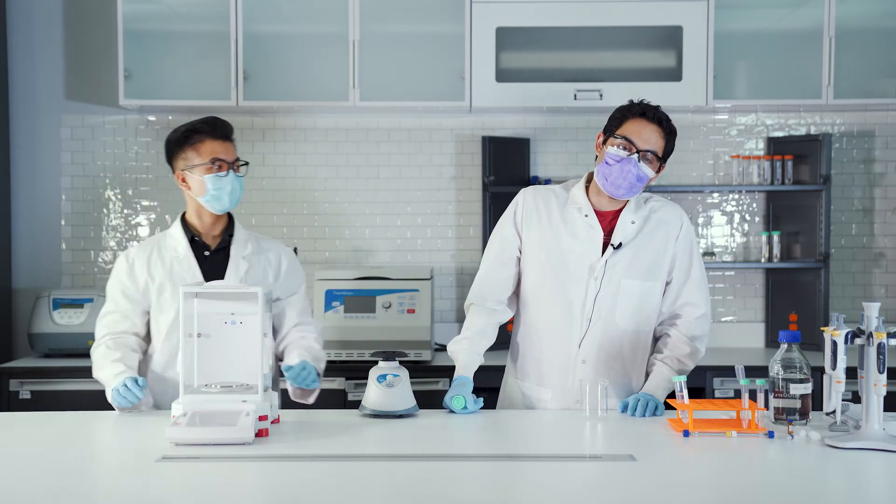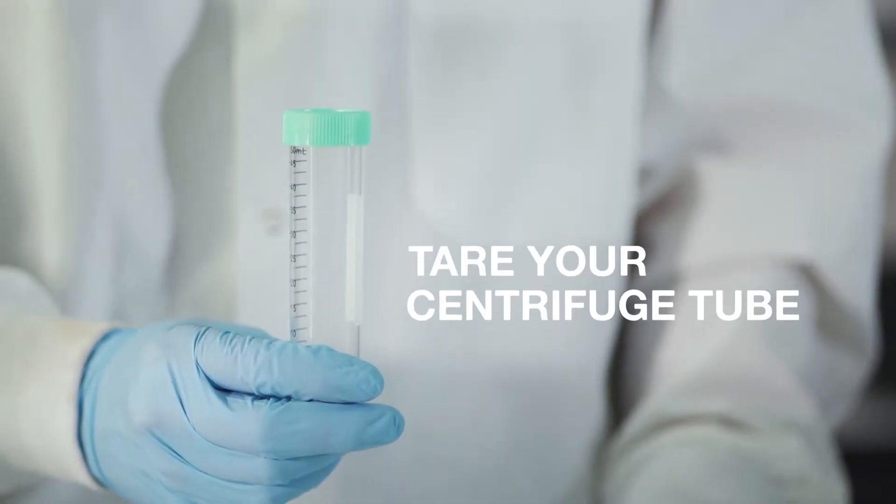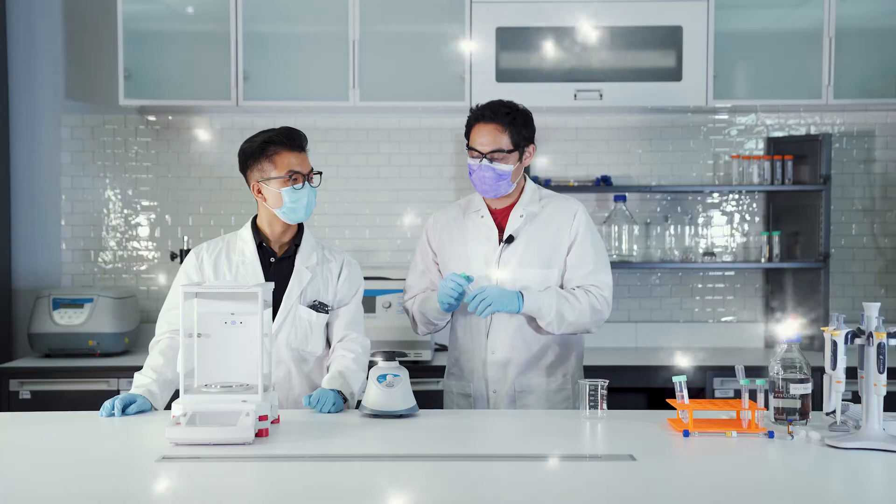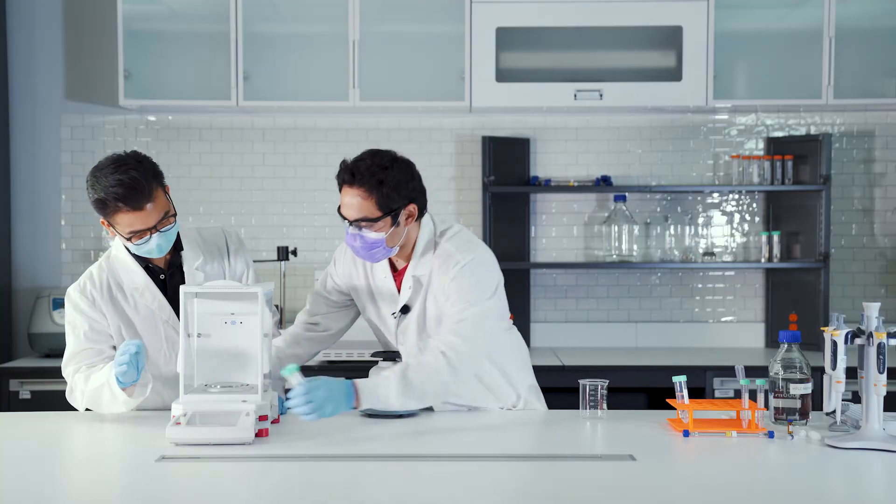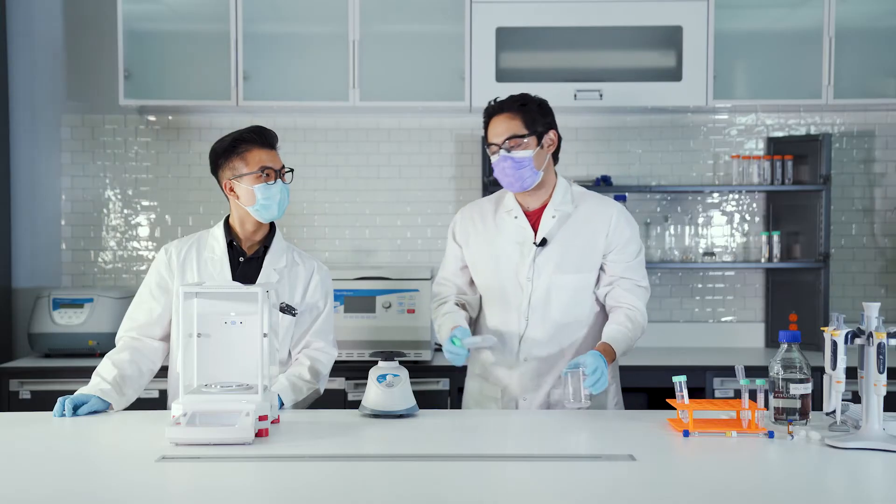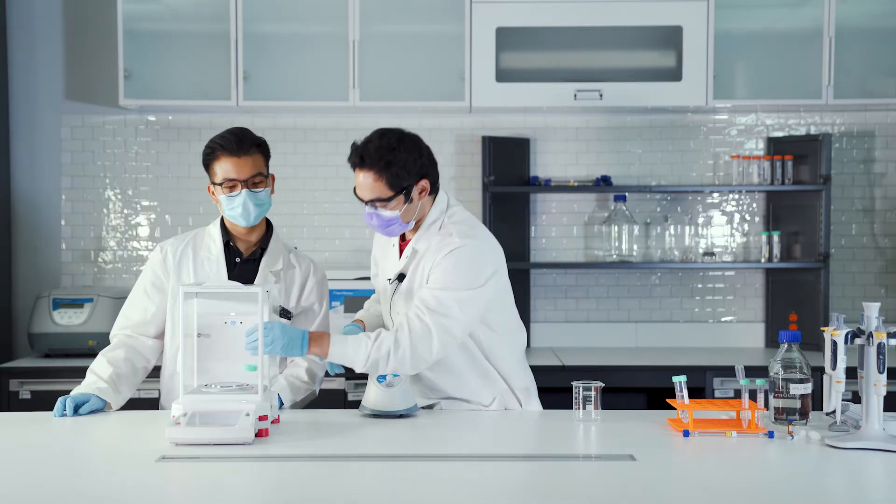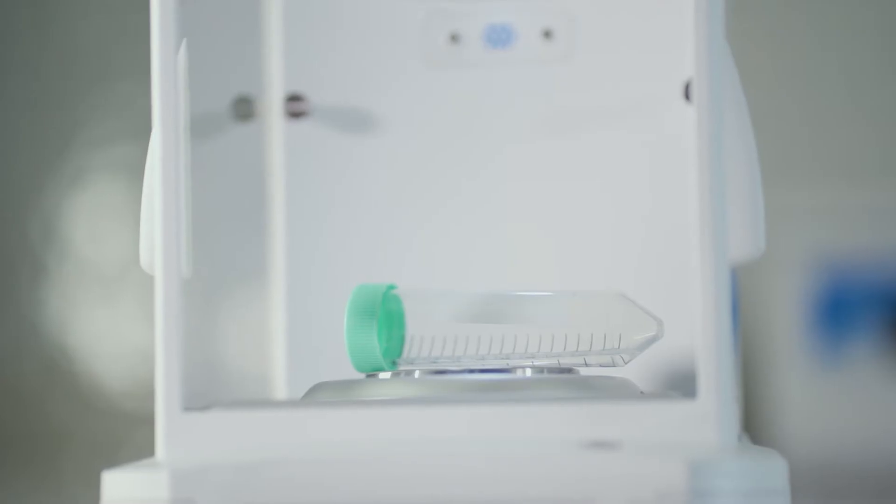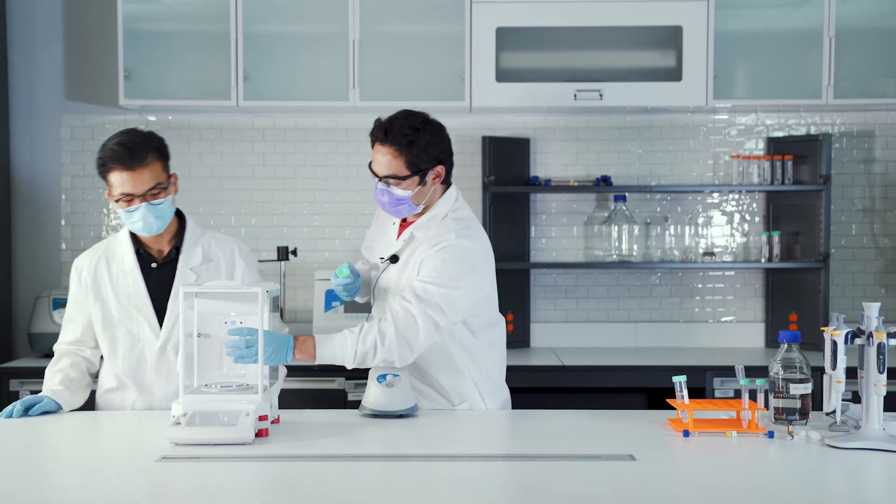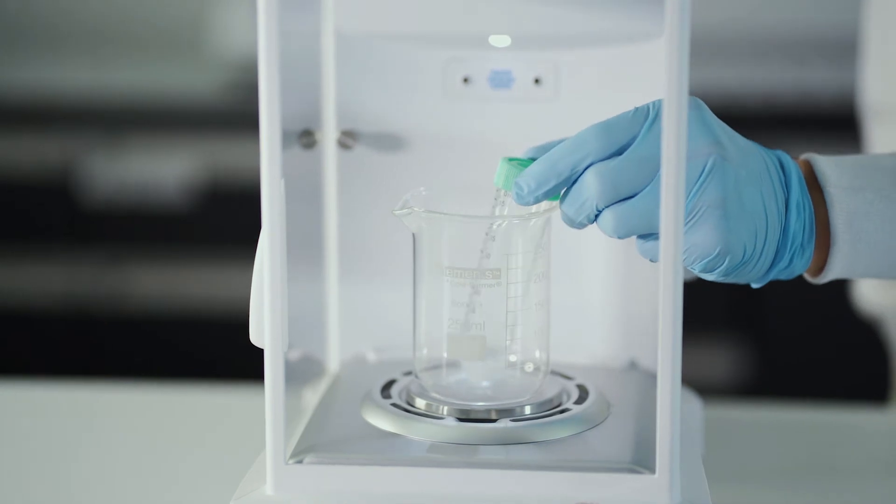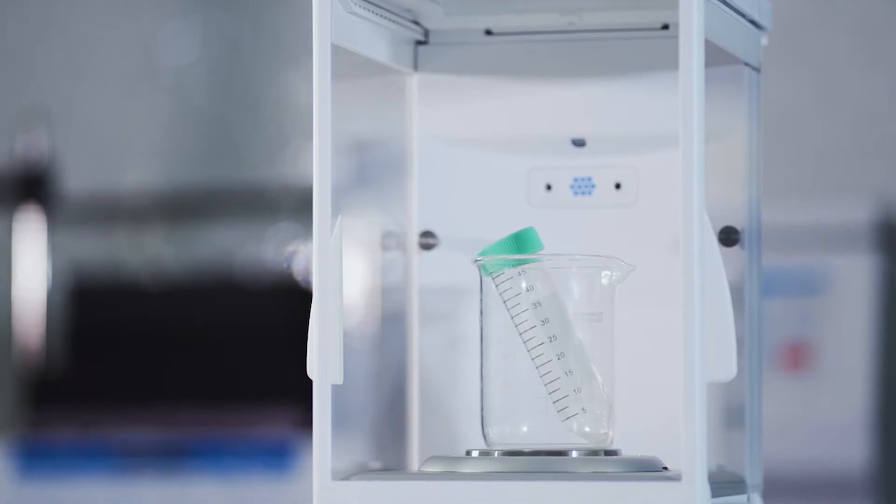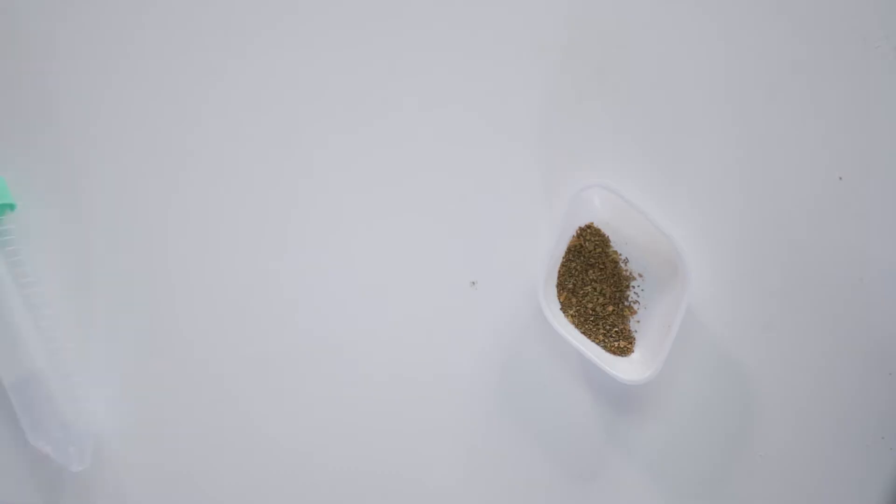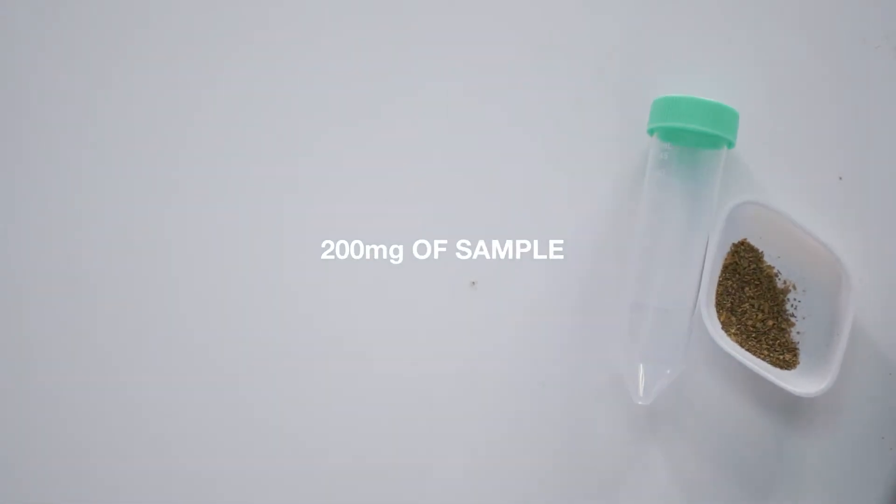The next thing that you'd want to do is tare your centrifuge tube. Lab hack for you: instead of trying to tare your centrifuge tube like this, get a beaker, put that in there, and boom, you can tare it that way.